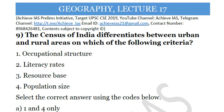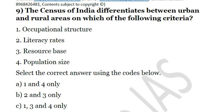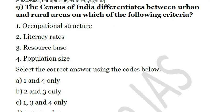The next question: the Census of India differentiates between urban and rural areas on which of the following criteria? First, occupational structure. Second, literacy rates. Third, resource base. Fourth, population size. The answer is one and four — occupational structure and population size are used for differentiating urban and rural areas.